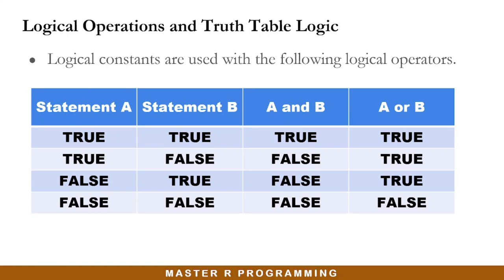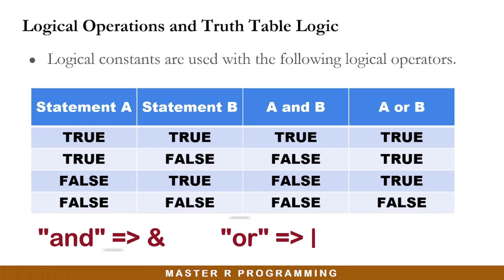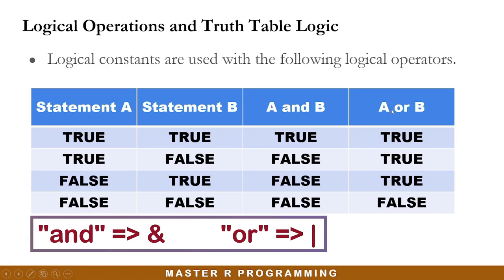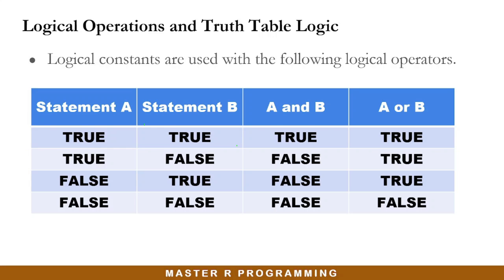Let us use the truth table logic to make sense of how these can be used together. We have four columns in the table: statement A, statement B, and then we compare the two statements using the AND operator and the OR operator. In R, the AND operator is written as the ampersand, and the OR operator is the pipe operator. For the second row, if statement A is true and statement B is also true, then A AND B will evaluate to TRUE, and A OR B will also be TRUE, since both statements are true.